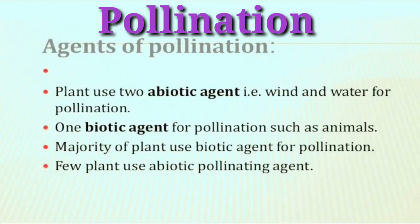In this video we are going to learn what is pollination and their types. First of all, we have to learn what is pollination. Pollination means transfer of pollen grains from anther to a stigma is called pollination.